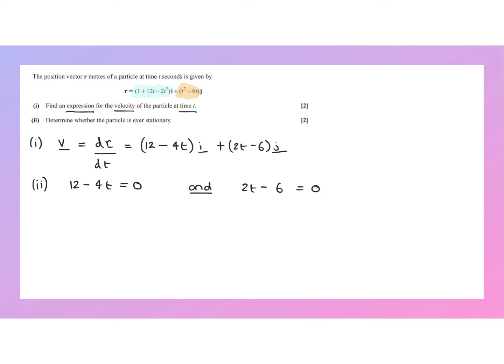Now, if we solve these two mini equations and we get a consistent value of t, then that's fine. At that time t, the particle is stationary. If we get two different values of t that aren't consistent, i.e. the same, then it's not possible for the particle to be stationary.